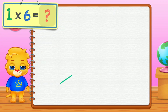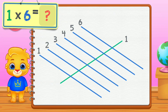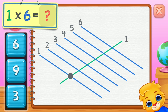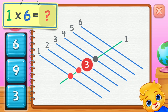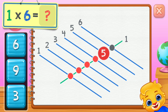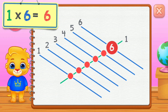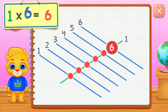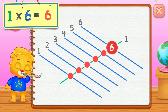One times six equals... One, two, three, four, five, six. One times six equals six.